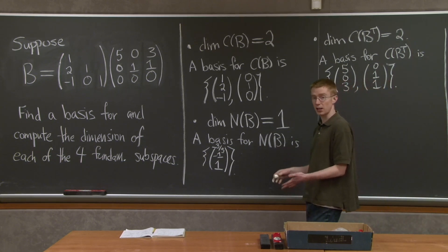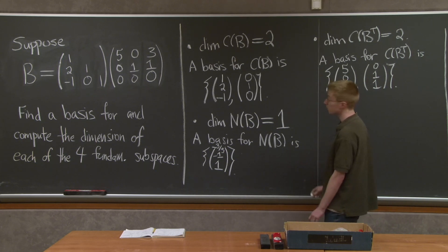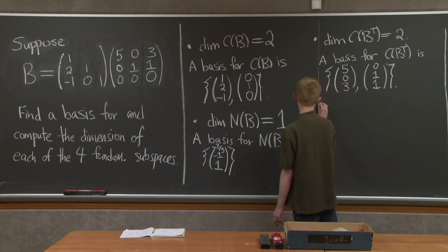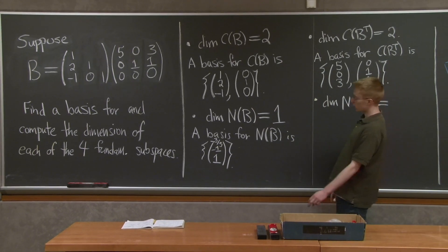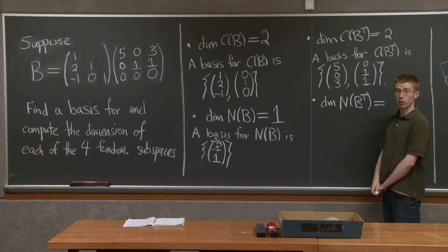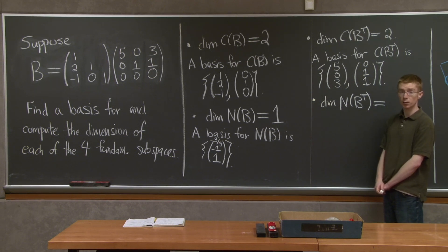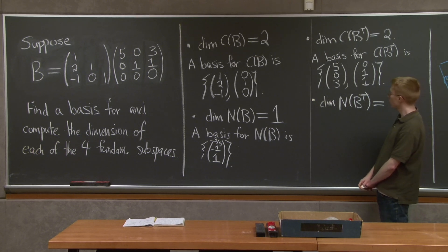The last one is always the toughest and the trickiest. We have to do the left null space, or the null space of B transpose. First, let's compute its dimension. What's the dimension of this left null space? Well, there's a similar formula to the one we used when computing the dimension of the null space. It's just the number of rows minus the number of pivots. So there are three rows, our matrix is 3 by 3, and there are two pivots. So this is just one dimensional again.